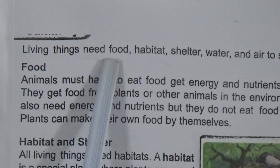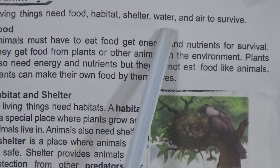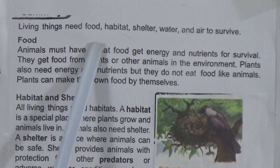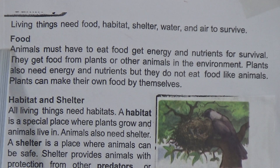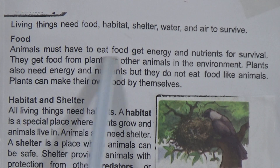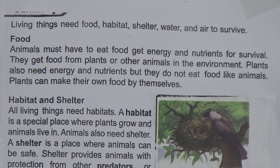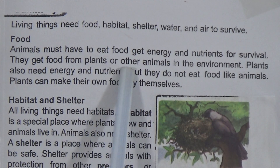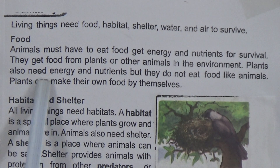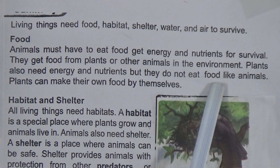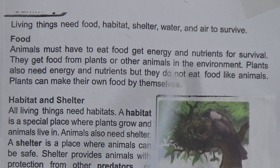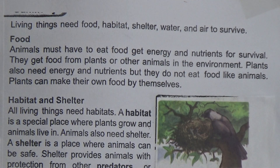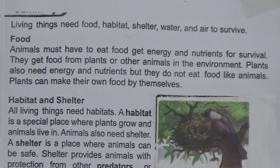Living things need food, habitat, shelter, and water to survive. Without these, we can't live. Animals must eat food to get energy and nutrients for survival. They get food from plants or other animals in the environment. Plants also need energy and nutrients, but they do not eat food like animals — plants can make their own food by themselves. Students, you can underline this important line.